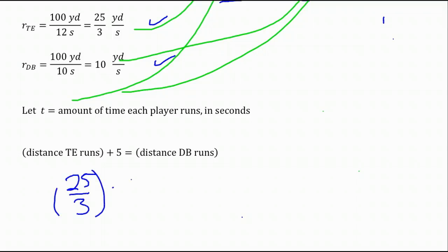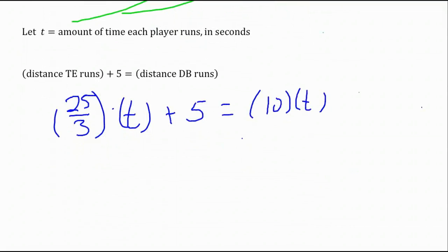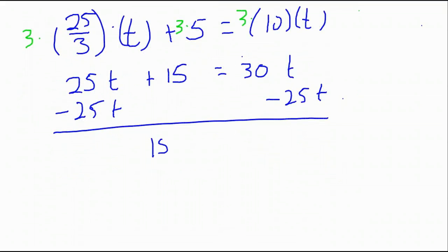We're going to then plug those in the appropriate places. The tight end's rate of speed is 25 thirds. We're going to multiply that by T, that's the amount of time that the tight end runs for, plus 5 is going to equal the rate of speed of the defensive back, which is 10 times T. And then we want to solve this equation for T. We want to clear the fractions out by multiplying each term on the left and the right by 3, the only denominator we see in the problem. That simplifies the equation to 25T plus 15 equals 30T. Subtract the 25T over, then simplify: 15 equals 5T. Divide by 5 and we get that T equals 3, or 3 seconds.